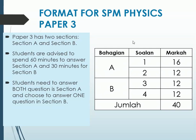Alright, so the format for SPM Physics Paper 3. Paper 3 has two sections, Section A and Section B. Section A has two questions. Question number 1 has 16 marks. Question number 2 has 12 marks. This is the one that we're going to focus in this video. Section B has Question 3 and Question 4. Normally in SPM, Question 3 will be from Form 4. Question 4 is actually a Form 5 question. Both of these questions are 12 marks, but luckily you only have to pick one of it. So you are advised to use 60 minutes in Section A and 30 minutes for Section B. So yeah, Paper 3 is one and a half hours.